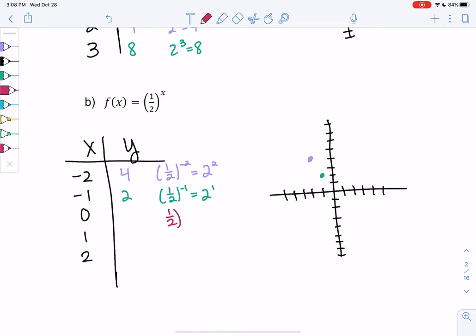So we go over to negative 1 and we go up to 2. 1 half to the 0, anything to the 0 power is always 1. So we get 0 and 1.